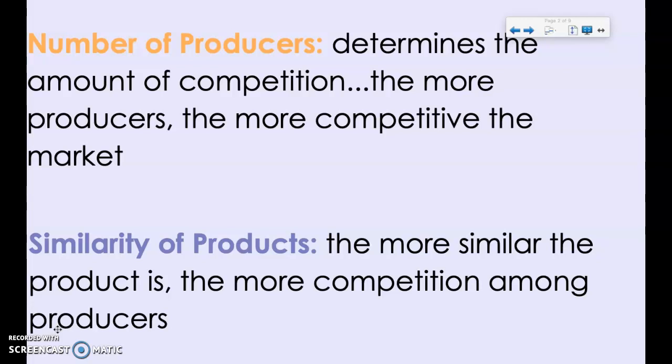Similarity of products: the more similar the product is, the more competition there is. If everybody's making the same thing, as a consumer you've got a lot of different choices. You can go to a variety of different fast food locations. There are a lot of burger places in the fast food market — they're all creating a similar product, so there's a lot of competition, giving consumers a lot of choice.